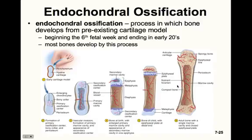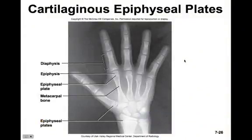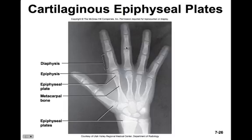The adult bone has a single marrow cavity and closed epiphyseal plates, at which point the bone has reached its maximum length. This x-ray shows the epiphyseal growth plates in many different long bones of the hand. At the end of each bone, you can see the epiphyseal plates, and the epiphyseal growth plate is the space in between them.